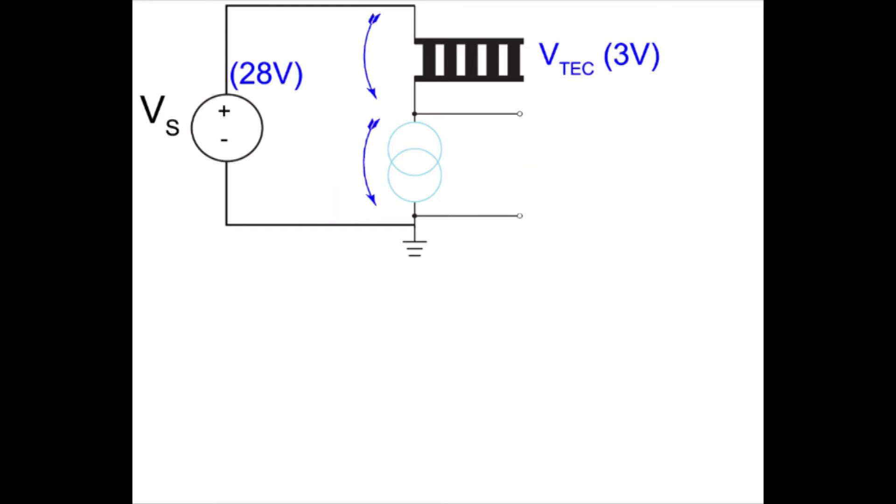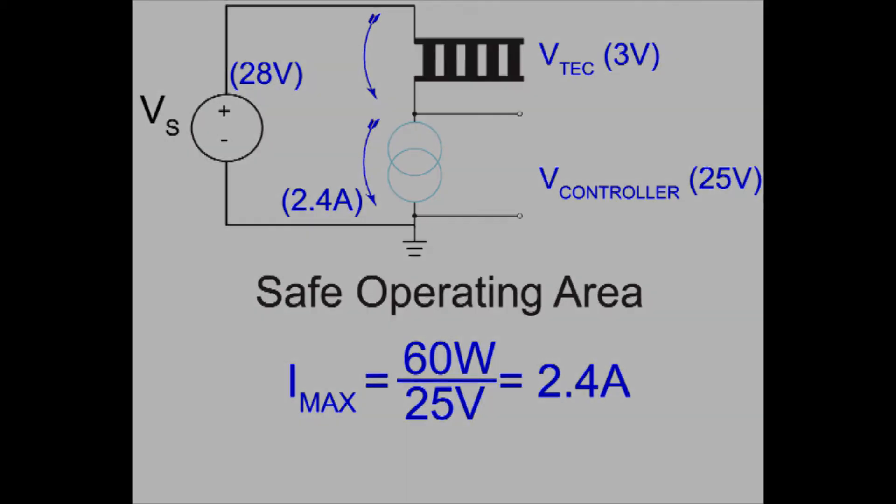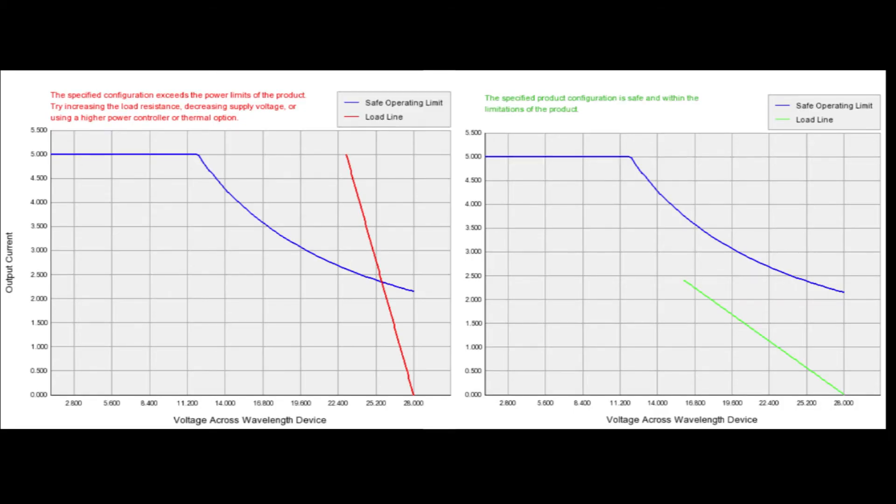Alternatively, with this power supply and thermoelectric, the maximum current within the safe operating range is less than 2.4 amps. The maximum current and voltage specifications are tied, not independently achievable. Wavelength provides online safe operating area calculators for all components and modules to simplify power supply choice and safe operational parameters.